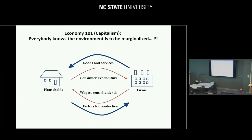Now, the environment gets marginalized. We know that — it's in our training. When you take a class in Economics 101, which is capitalism, which most of us probably adhere to, you see: here's the households, here's the farms, the government doing goods and services and factors of production. Where's the environment? It's not there. The environment is to be marginalized — that's the rule. We teach that in all institutions, including Yale and Harvard. That is the global model. So no wonder that the environmental statistical science is also not taken so seriously. It's a logical conclusion.